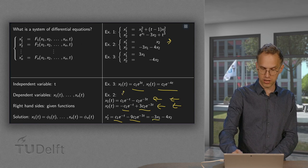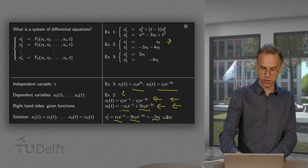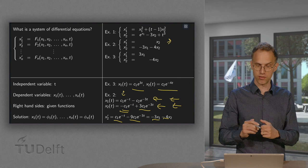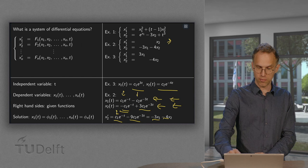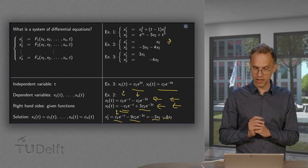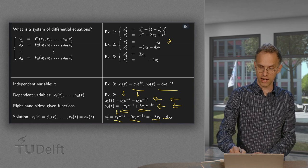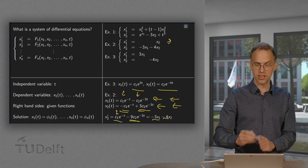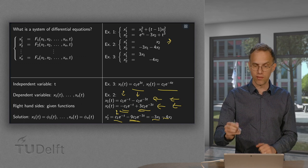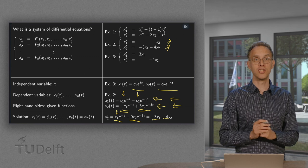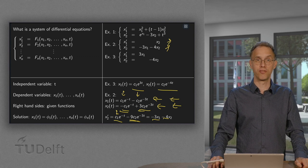Continuing the verification: minus 4 times x2 gives us plus 4C1, yielding C1 times e to the power minus t. For the other term we get plus 3 times e to the power minus 3t, minus 12C2 e to the power minus 3t, which is indeed minus 9 times C2 e to the power minus 3t. So we also satisfy the second differential equation, and this is indeed the solution of our system of differential equations.